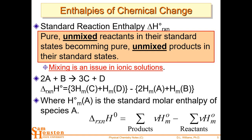Delta H of reaction is simply products minus reactants — we already did this in the last lab using combustion enthalpies from Gaussian. Were there any questions about finding those values or calculating delta G and equilibrium constants?